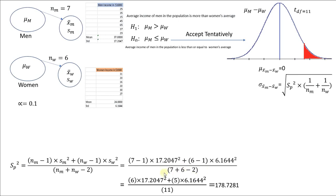...therefore the denominator would be 6 plus 5, which is 11, or 7 plus 6 minus 2, which is 11. When we do the math, we find that the weighted average of variances of the sample from men and sample from women would be 178,281.